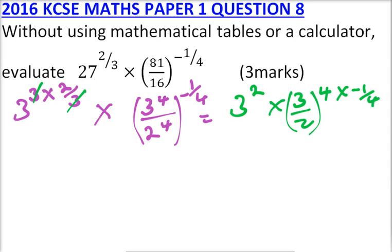So once you write like that, then 4 divided by 4 is 1, so this is equals to 3 to power 2, multiplied by, now this will be 3 to power minus 1, divided by 2 to power minus 1.